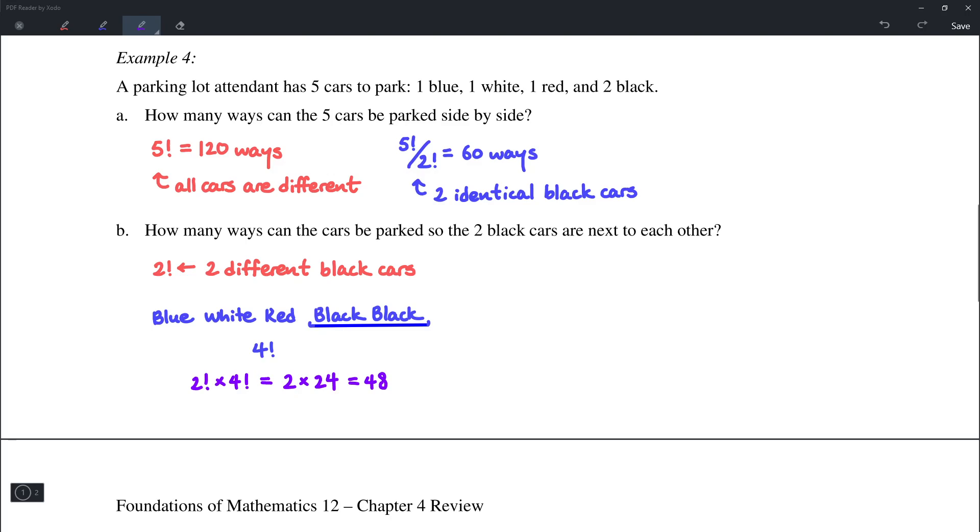However, if the two black cars are identical, then we simply have a blue car, a white car, a red car, and then the two black cars together. Which means we have 4! ways of arranging them. Okay, let's move on to the next example.